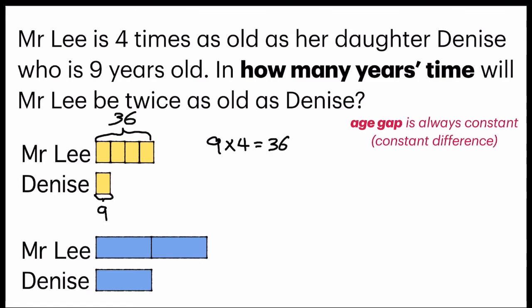So we know Mr. Lee is 36, Dennis' age is 9. We will find the age gap. 36 minus 9 is equal to 27. So the age gap difference, remember, it is always constant. So applying that 27 inside here.